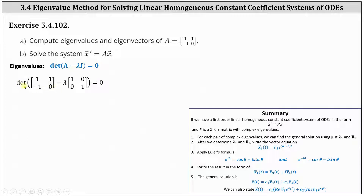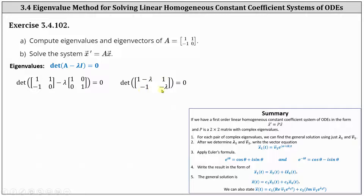We have the determinant of the difference of matrix A and lambda times the two by two identity matrix equals zero. Simplifying inside the parentheses, we get the determinant of the two by two matrix with entries one minus lambda, one, negative one, and negative lambda.